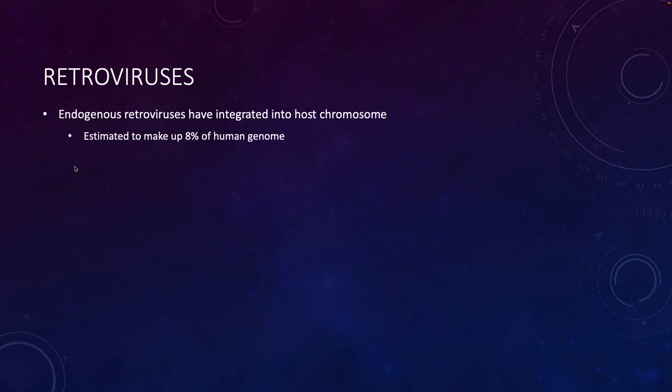There are other retroviruses that we do see in people and other animals. They're called endogenous retroviruses that have integrated into our chromosome and been maintained throughout our evolutionary history. It's estimated that these remnants of our previous viral infections make up up to 8% of our genome, and there are other animals that have them as well.